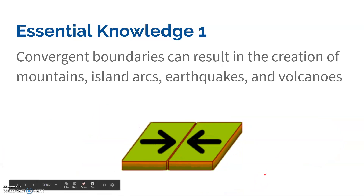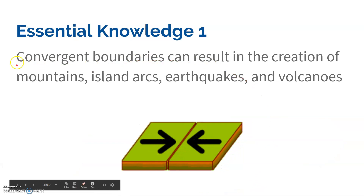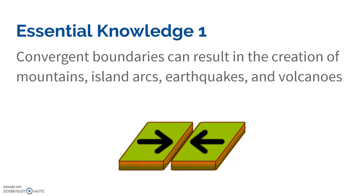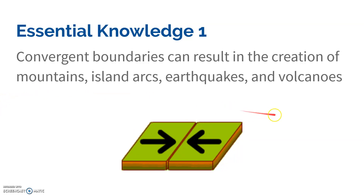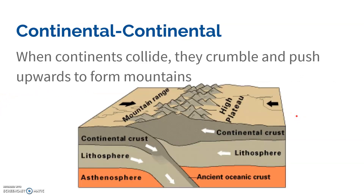First, we have convergent boundaries. Convergent boundaries converge — the two plates are coming together — and they result in mountains, island arcs, and volcanoes. There are three different types of convergent boundaries.